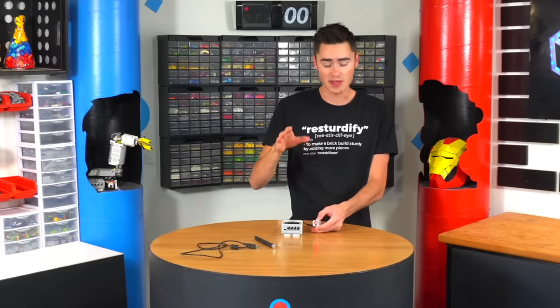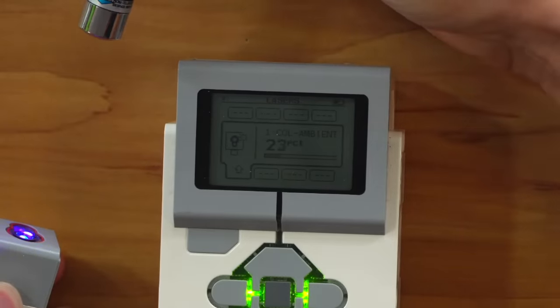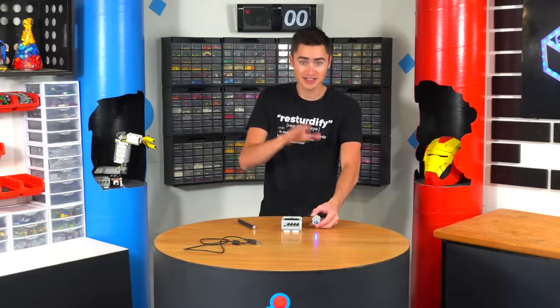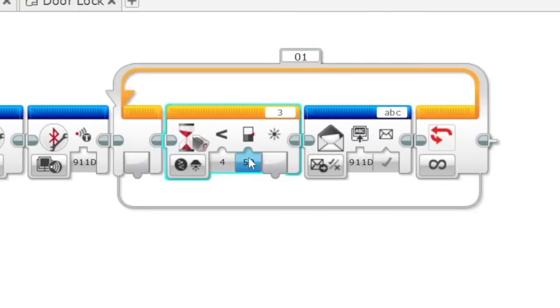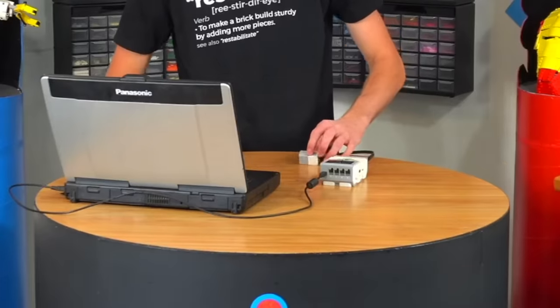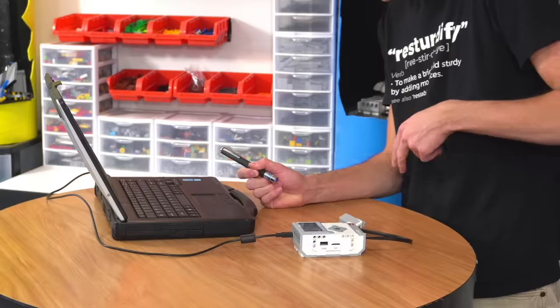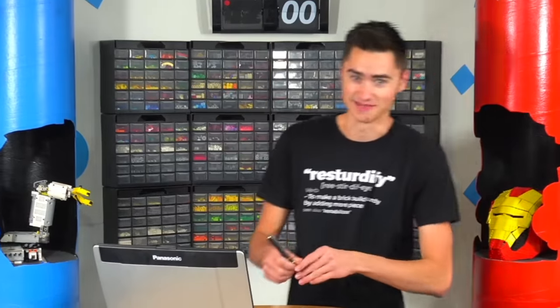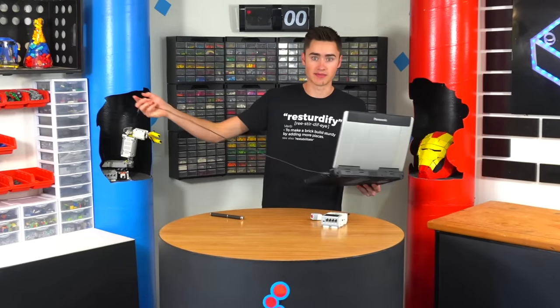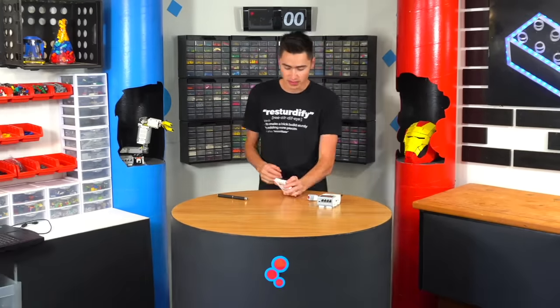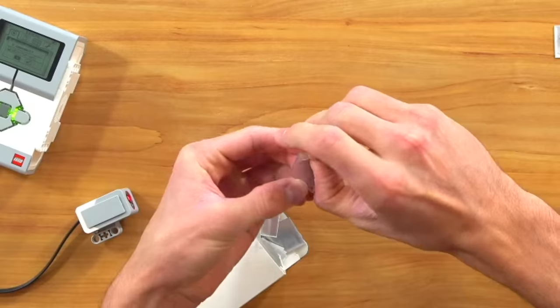If we shine this laser at it, it should go up. We can actually use this to make our security system by coding it so that when it senses the ambient light level drop below 90, we can get it to trigger another function in the room. It works. That's awesome.